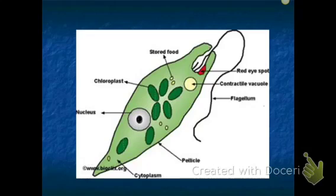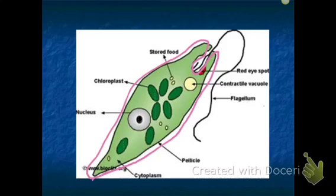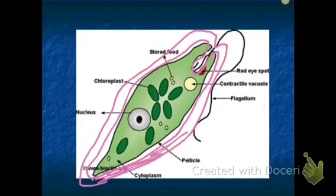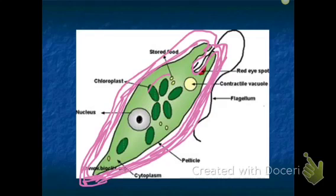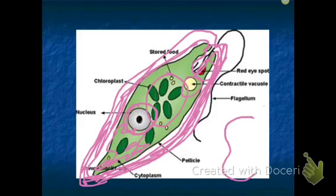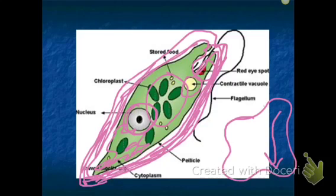The euglena has something special called a pellicle — a second layer outside the cell membrane, similar to how a plant cell has a cell membrane and a cell wall. The pellicle helps the euglena keep its shape. Inside are chloroplasts — green structures where photosynthesis occurs — because the euglena is both plant-like and animal-like. There's also a contractile vacuole, a red eye spot, a nucleus, and cytoplasm. Cytoplasmic streaming is how the cytoplasm moves to help the protist move.